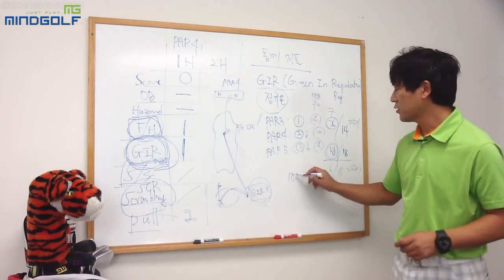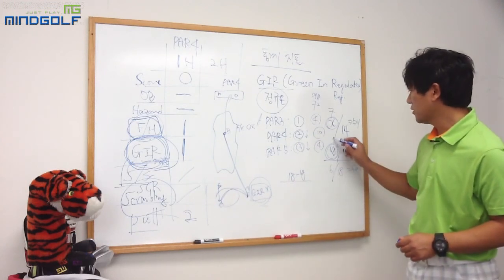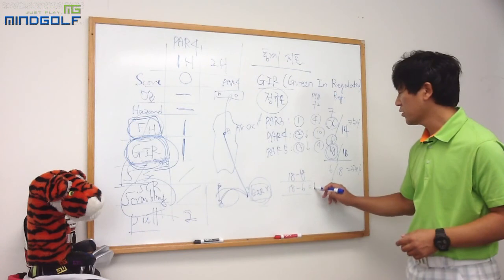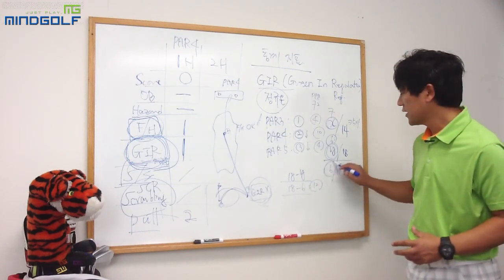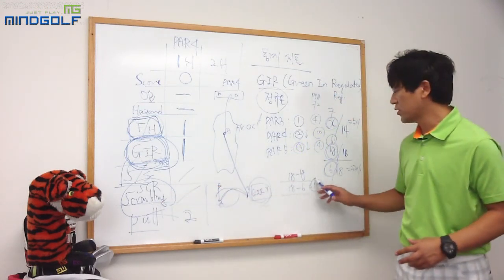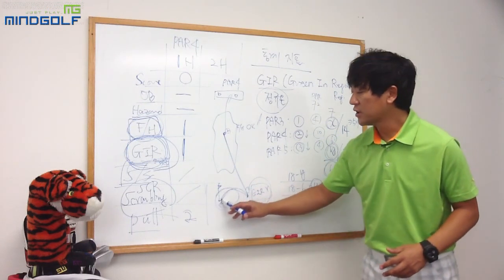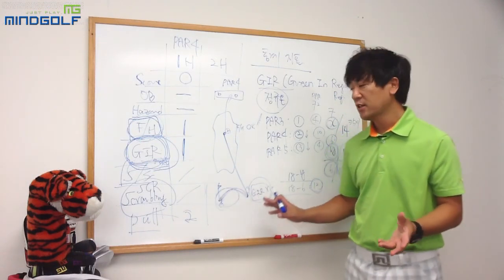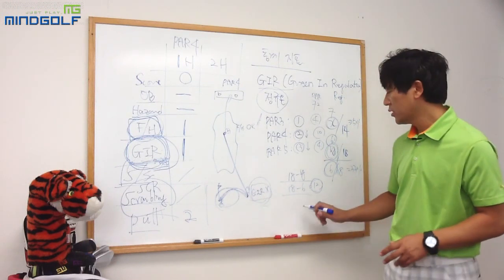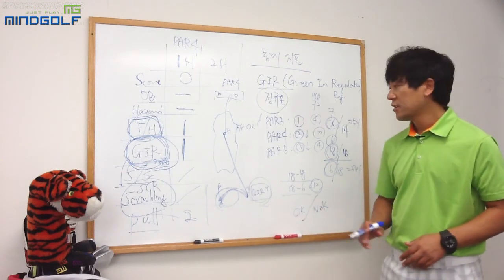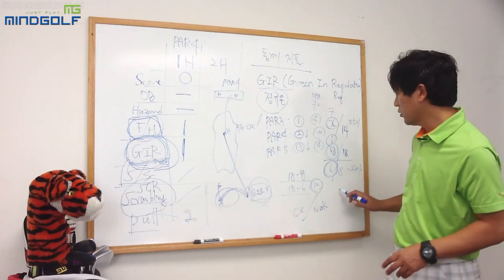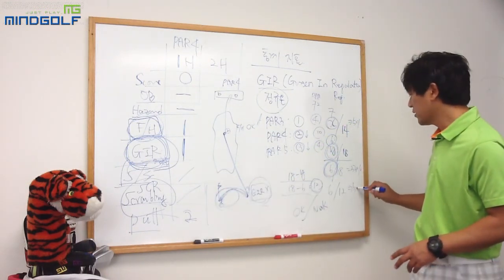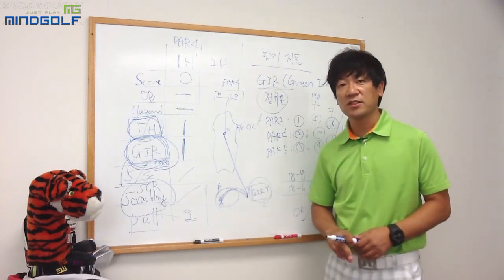스크램블링이란 G.I.R.을 하지 못한 홀에서 파 이하를 달성하는 것입니다. 예를 들어 18홀 중 G.I.R.을 6번 했다면 G.I.R.을 하지 못한 홀은 12번입니다. 이 12번이 스크램블링 기회가 됩니다. 그린을 올리지 못했을 때 그린 주변에서 공을 잘 붙여 원퍼트 또는 직접 홀인으로 파 또는 버디를 하는 경우를 스크램블링 성공이라고 합니다.